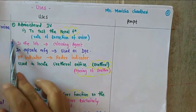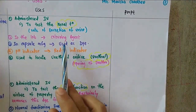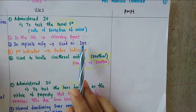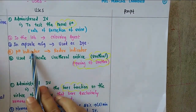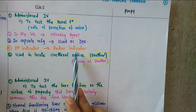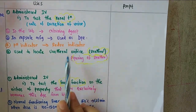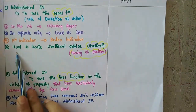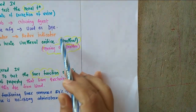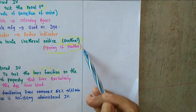Indigo carmine is used to locate the urethral orifice — that is the opening of the urethra. So the major use is testing renal function by determining the rate of excretion of urine. Since it is a dye, it is also used as a colouring agent in the lab, as a dye in capsule manufacturing, as a pH/redox indicator, and to locate the urethral orifice.